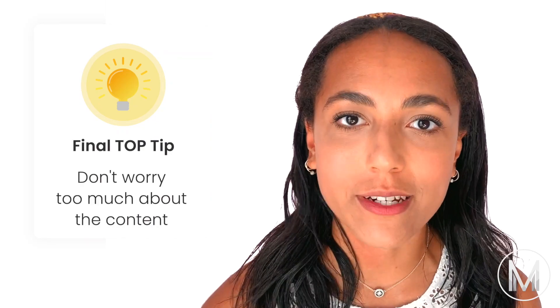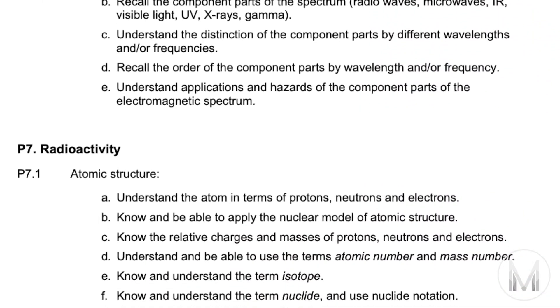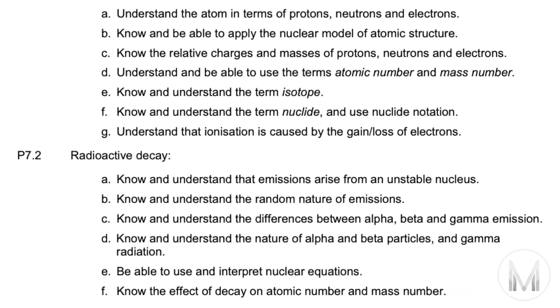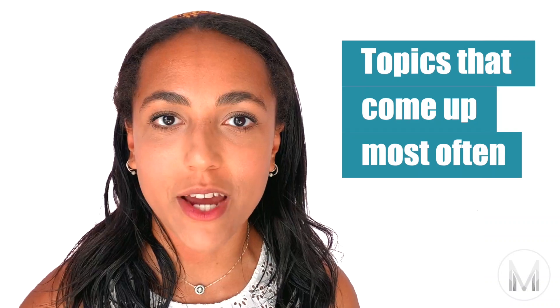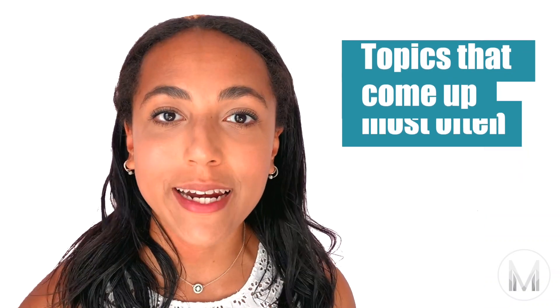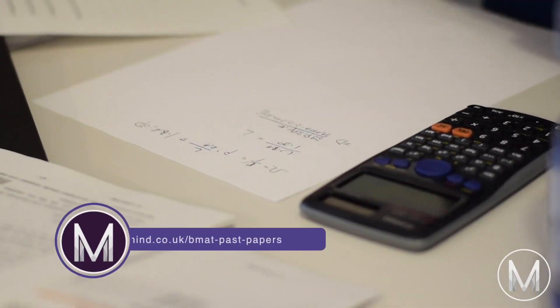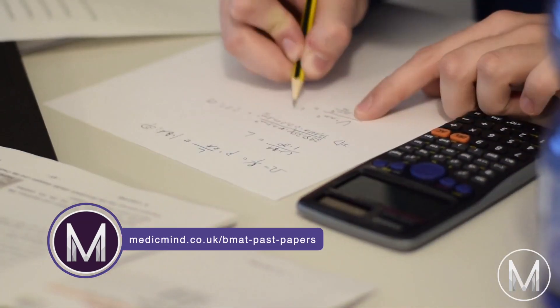My final tip is to not worry too much about the content. When I prepared for my BMAT, I was really preoccupied by one or two topics mentioned in the specification that probably wouldn't come up in the paper. Have a look at the list of topics that come up most often for each subject and make sure you know these really well. These are far more likely to come up, and you'll get a lot more answers correct by learning these rather than one niche topic that might not appear at all.